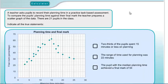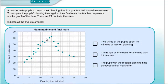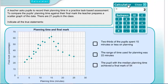Question 6. We have a scatter diagram where a teacher asked pupils to record planning time and final mark for a task-based assignment. There are 21 pupils in the class. Statement 1: Two thirds of the pupils spent 15 minutes or less on planning. Two thirds of 21 is 14 pupils — we can verify on the calculator: 2/3 times 21 equals 14.